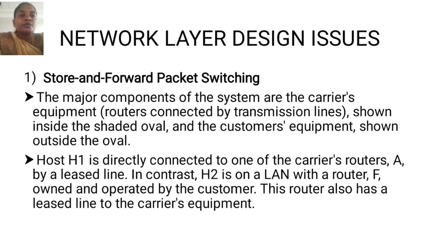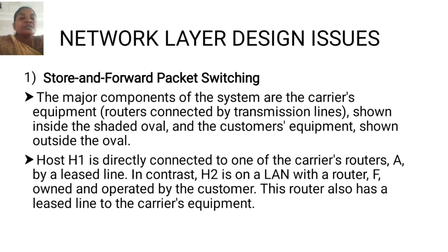The first topic is Network Layer Design Issues — Store and Forward Packet Switching. The major components of the system are the courier's equipment and routers connected by transmission lines, shown inside the shared oval, and the customer's equipment shown outside the oval. Host H1 is directly connected to one of the courier's routers, A, by a leased line.